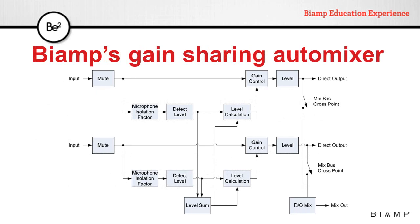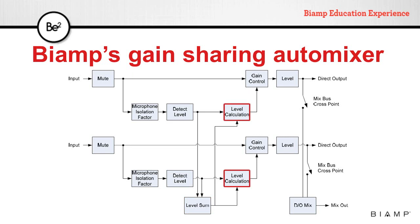This block diagram represents two channels of BiAmp's gain sharing automatic mixer. The first thing the signal encounters is a mute button. After that, the signal is diverted to the gain controller and the microphone isolation factor. This block checks the signal against a threshold to establish if it is a valid signal or not. The next step is to detect the level of this input. This level is summed together with the level of all the other channels in the automatic mixer and fed back to the channel's level calculation block. Here, the mixer sets the proportional level the gain controller needs to apply to that channel if it is active or not. After all the processing is done, the signal goes through a level adjustment, which is done at the end of the chain to maintain proper operation of the mixer. All signals are finally then mixed together.